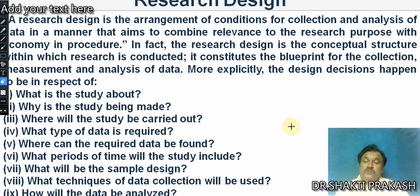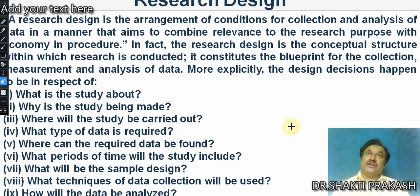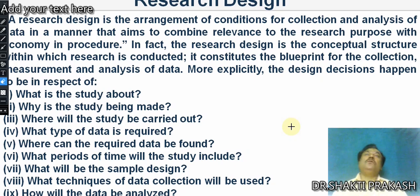Next, you should know what type of data is required. Data collection may involve surveys with questionnaires — that is, primary data — or secondary data from literature reviews. Secondary data can be obtained from journals, magazines, internet websites, statistical diaries, and many other sources. If primary data is required, you go to a particular area to get the required information for your research.